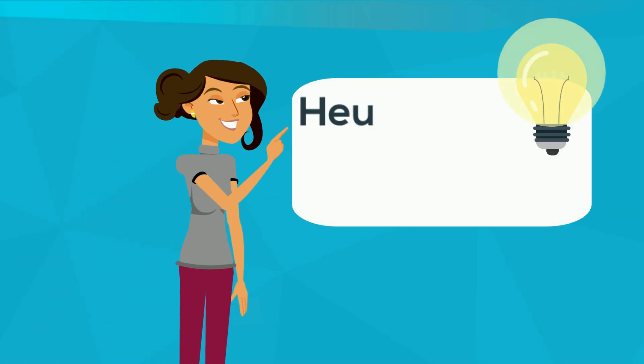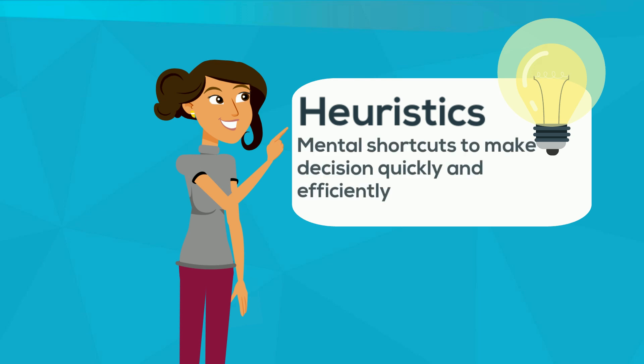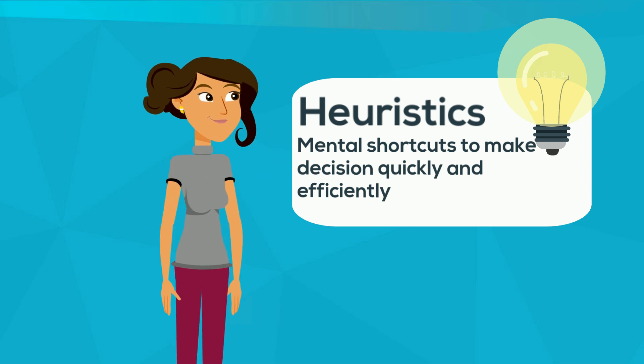A heuristic is a mental shortcut that allows us to solve problems and make judgments quickly. Basically it's a rule of thumb when we're making decisions. It allows us not to think about every action every second and all the time.